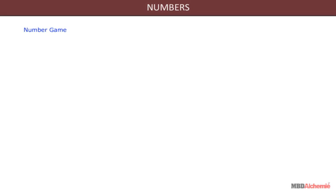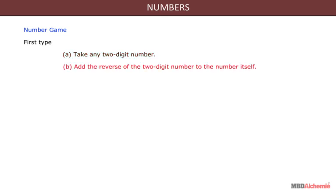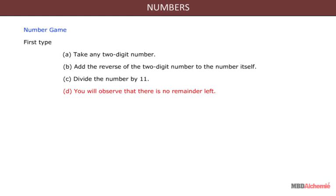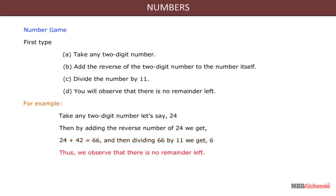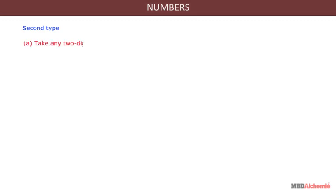Number game, first type: Take any two digit number, then add the reverse of that two digit number to the number itself. Now divide the result by 11. You will observe that there is no remainder left. For example, take 24: adding the reverse gives 24 plus 42 equals 66, and dividing 66 by 11 gives 6 with no remainder.